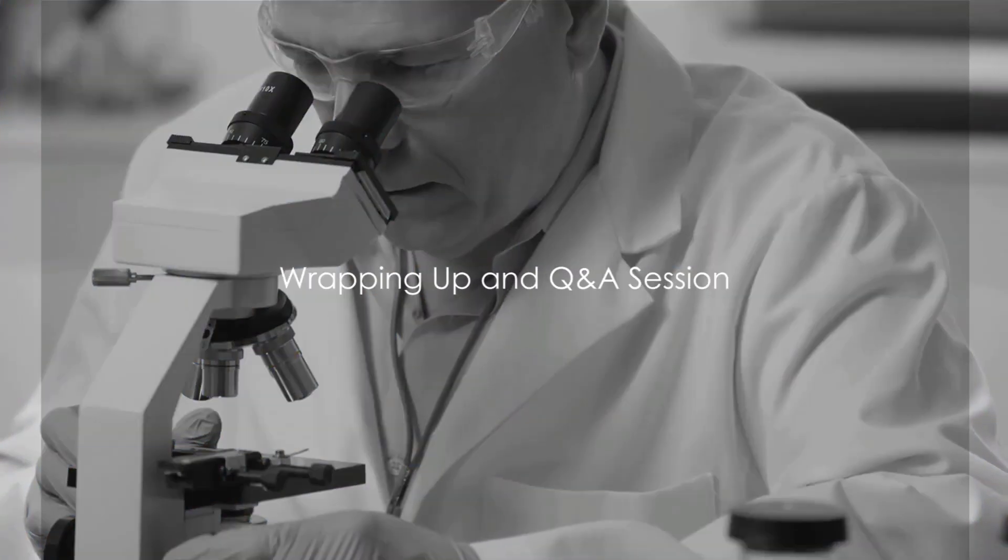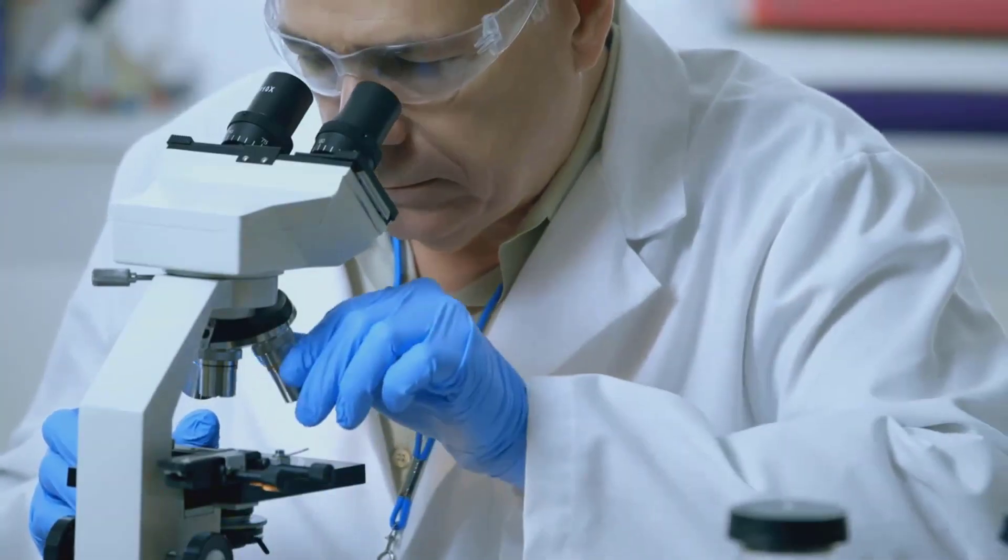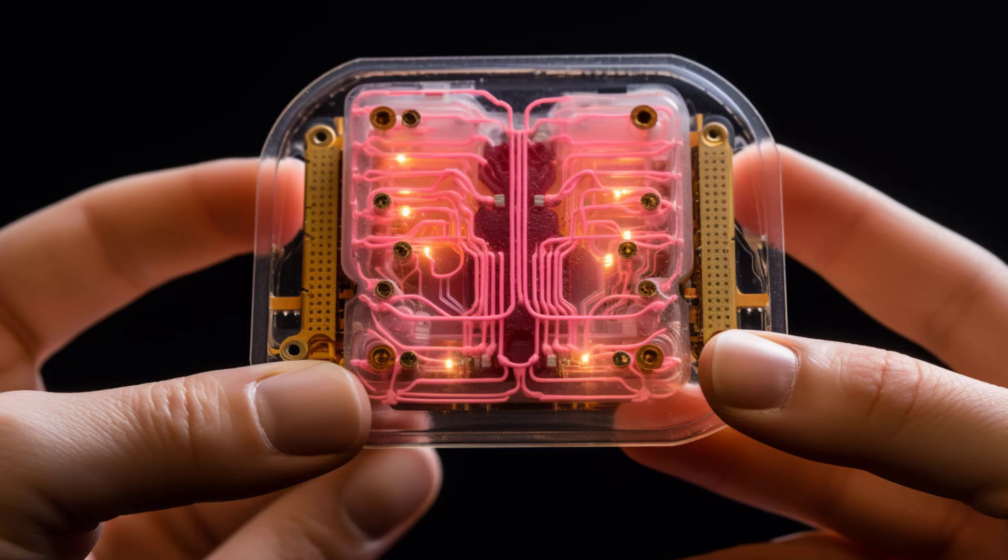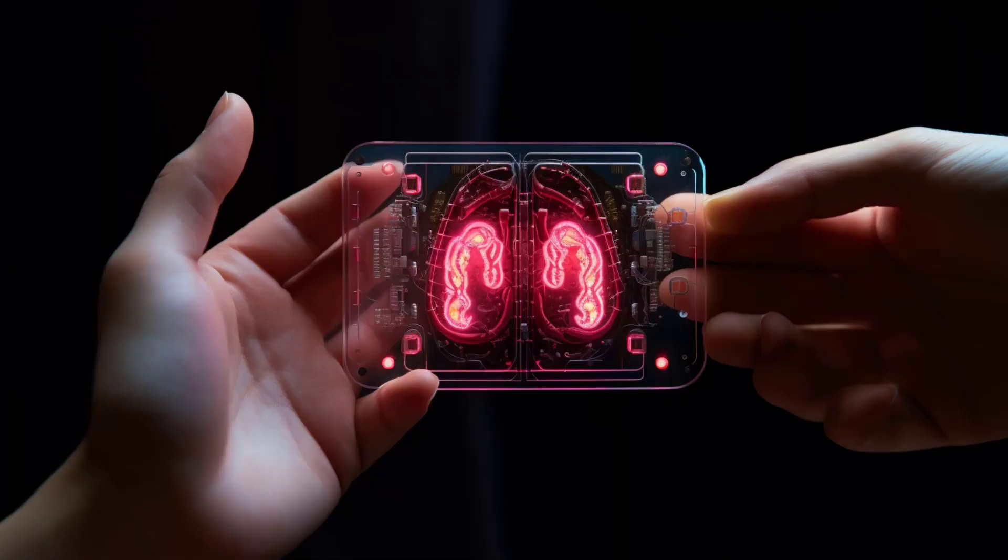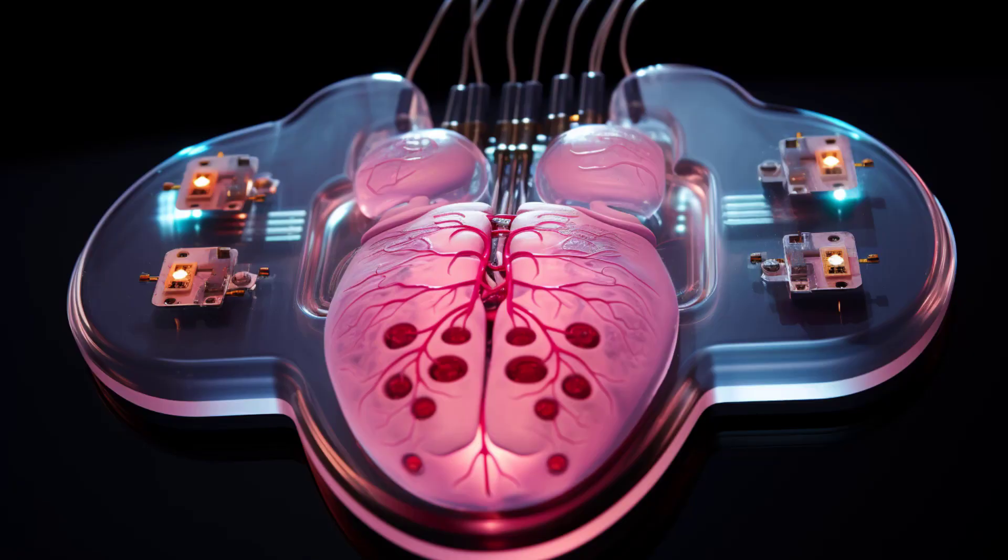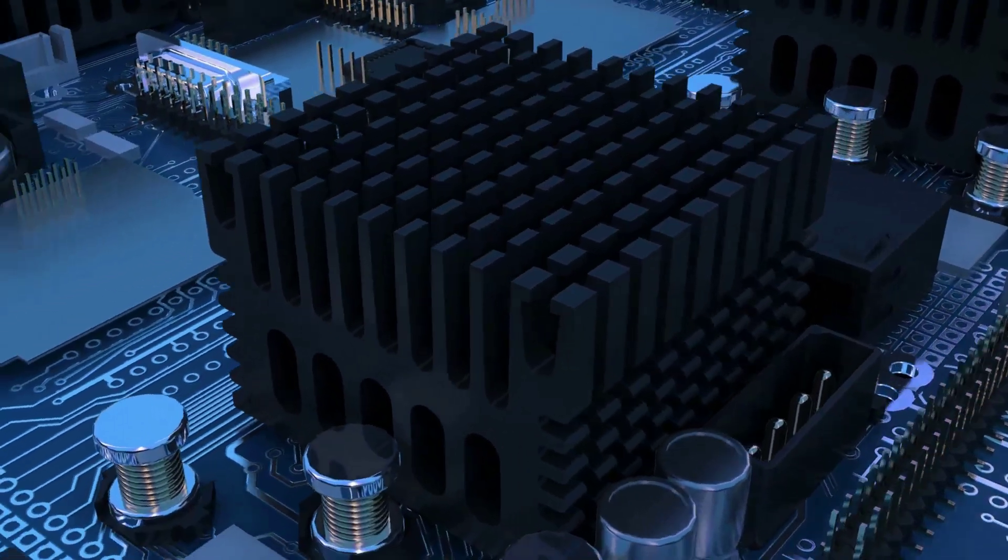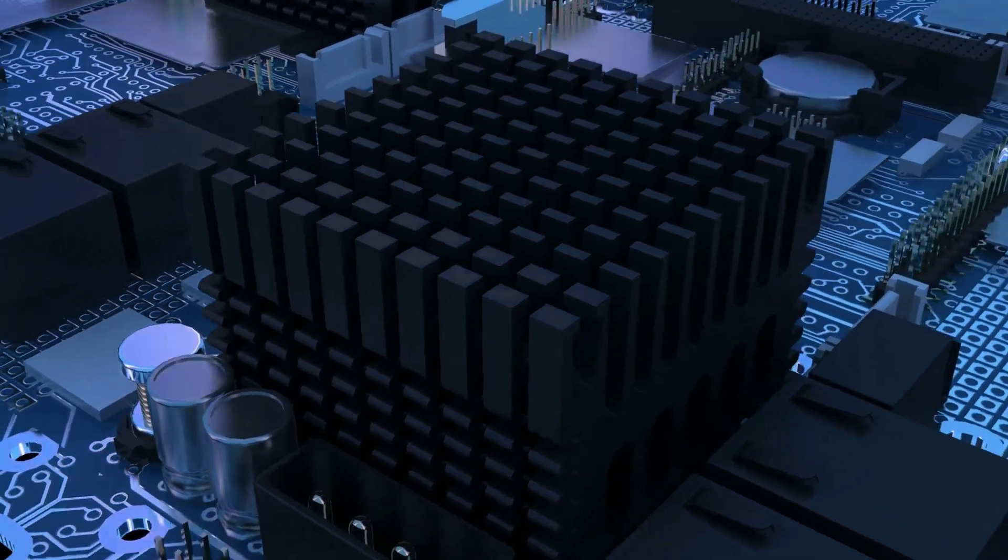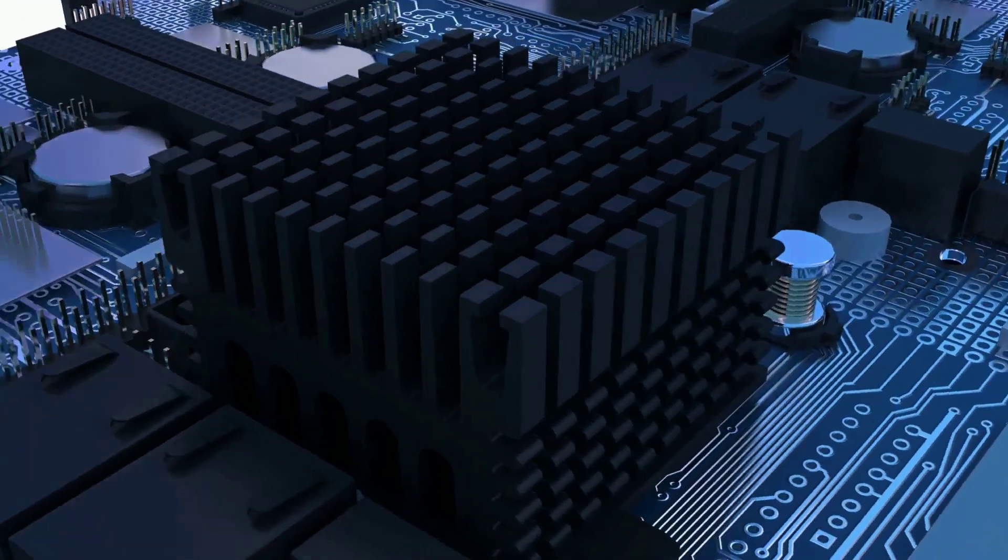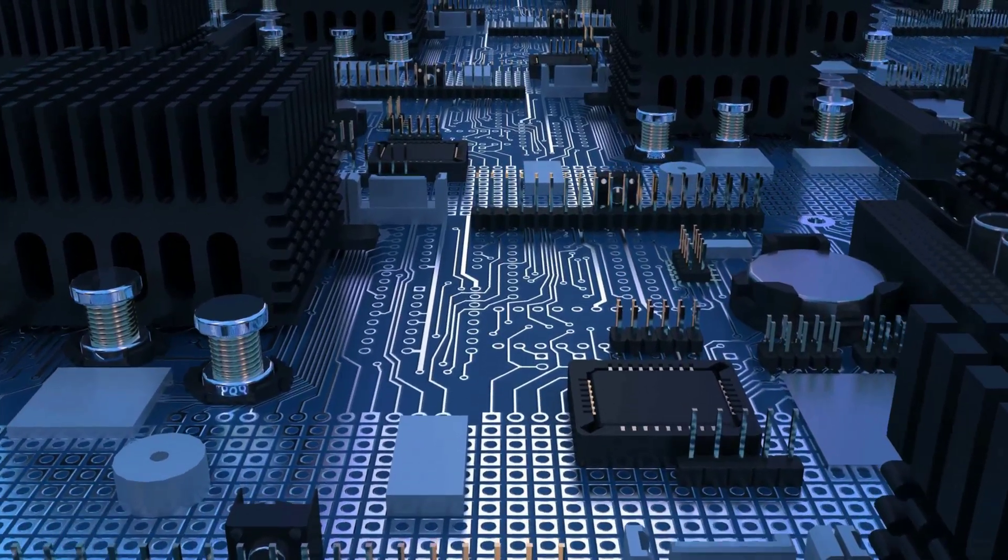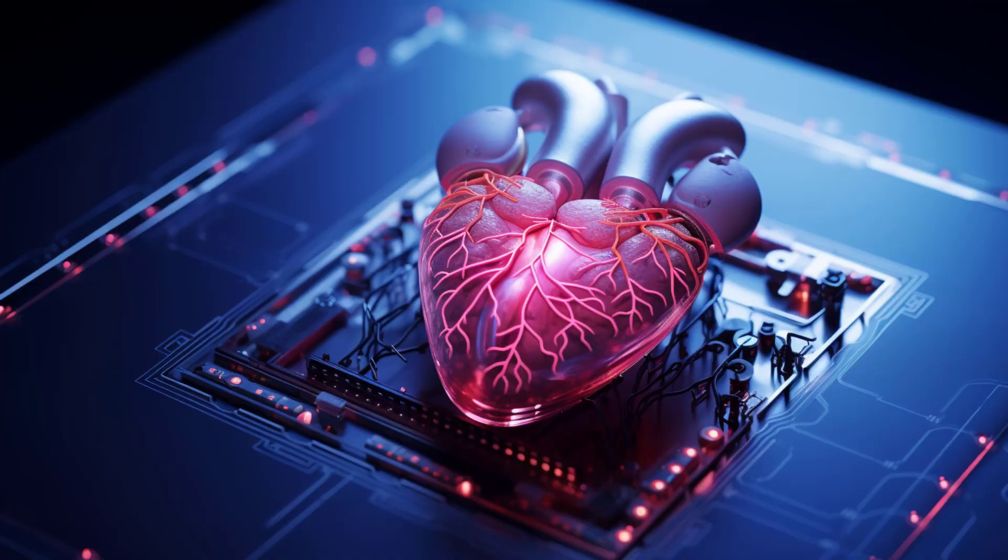We've covered a lot of ground today on LOC technology. From its historical development to its future prospects, we've seen how this compact system is revolutionizing fields ranging from chemical analysis to drug development. We've delved into the nitty-gritty of microfabrication and microfluidics and explored how sensors and electronics are integrated into these tiny yet transformative devices. Let's revisit some of the key points. Lab on a Chip, or LOC, is a miniaturized device that integrates several laboratory functions onto a single chip. The potential of this technology is immense, offering faster, cheaper, and more efficient solutions for diagnostics, environmental monitoring, and pharmaceutical analysis, just to name a few.